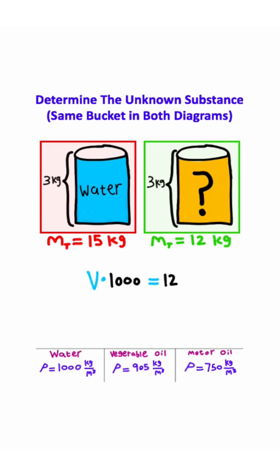I'll multiply the volume on both sides, giving me this equation. I divide both sides by 1,000, and 12 divided by 1,000 will give me this volume.